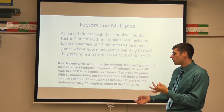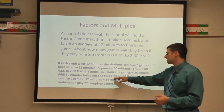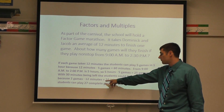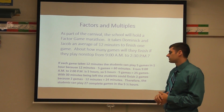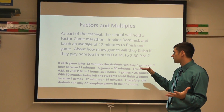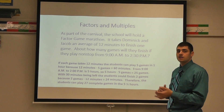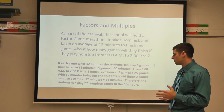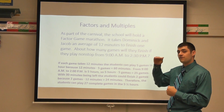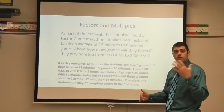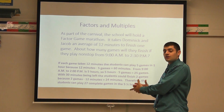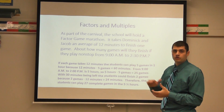I also have 30 minutes left over. With 30 minutes remaining, they can finish two full games, because two games times 12 minutes equals 24 minutes. Therefore, the students can play 27 complete games in the five and a half hours — 25 games in the first five hours and two more full games in the next half hour. Now, 28 games would also be an acceptable answer, since they would have started but not finished the 28th game. So either 27 or 28 games would work.